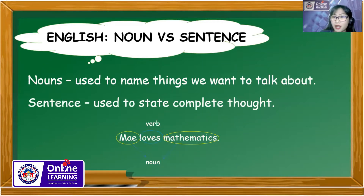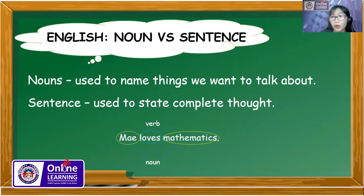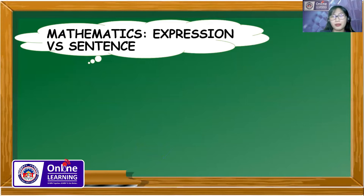A typical sentence has at least one noun and at least one verb. That is the noun versus sentence in English language. Now, what is the connection of the English language to mathematical language? The same ideas apply: in English language we have noun and sentence; in mathematics, we have expression and sentence.